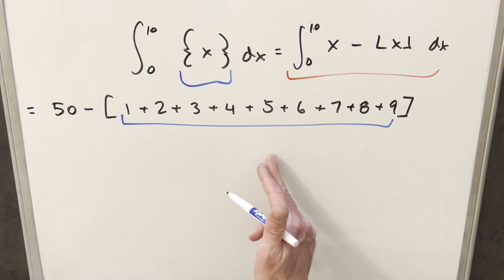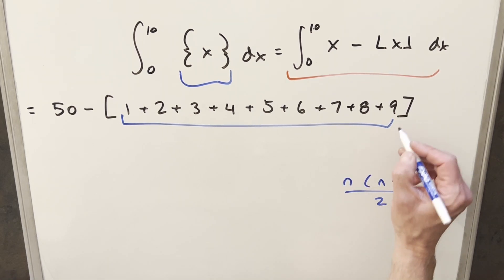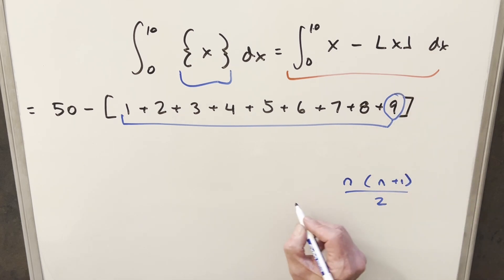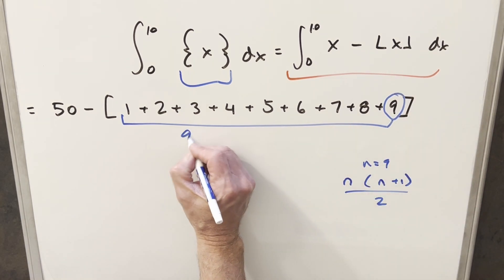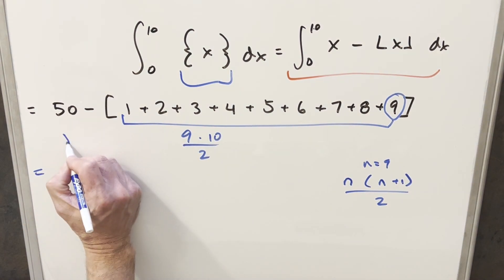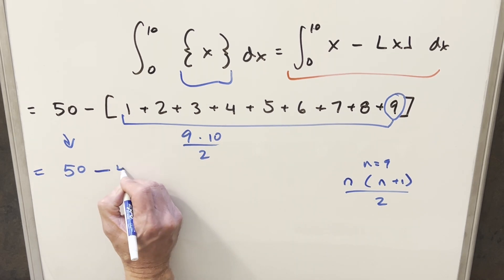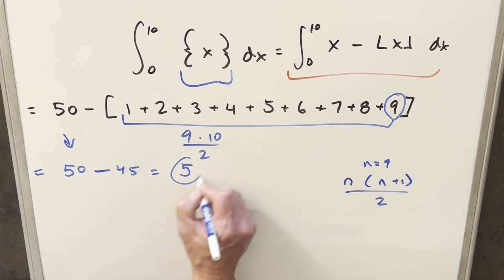But we actually don't have to add this up as this is actually the sum of the first n integers. We have a formula for this, which is just n times n plus 1 all over 2. Where in this case, the n is going to be this value. So our n is going to be equal to 9. So to calculate this, we just need 9 times 10 over 2. And so let's just calculate this. We bring down this 50 and we have 50 minus here, we get 90 divided by 2. So minus 45. And so for our final solution to this, we get just 5.